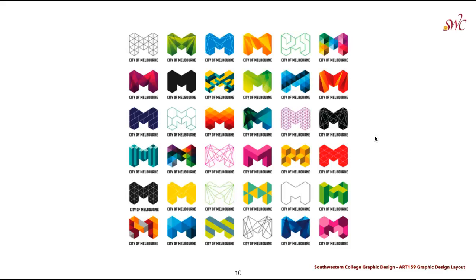This is another branding project created by Stefan Sagmeister — a logo for the city of Melbourne, which has all of the different styles created in this overall modular structure of the letter M. Within this M shape, they are able to play with all of these different textures, line qualities, and different shapes, but they all create a very cohesive structure to the overall branding of the project.